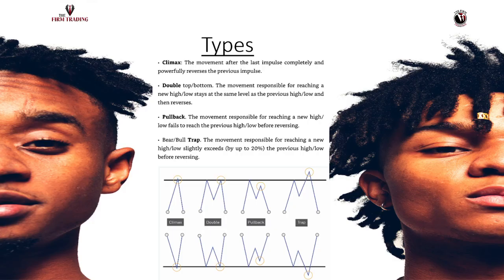The types of causation include the climax, the last impulse movement - when we see just a pump and then a low volume pullback. Then you've got the double top and double bottom pullback. This is why we went over a couple weeks ago with Van's TA session how to make sure we're switching trends from an uptrend to a downtrend.